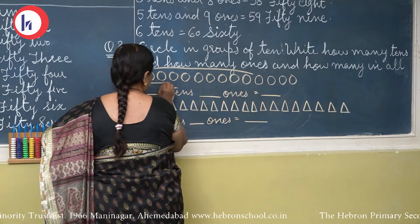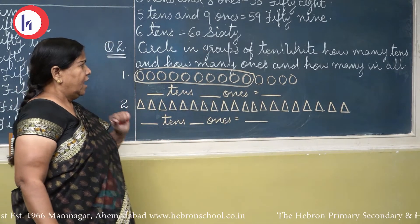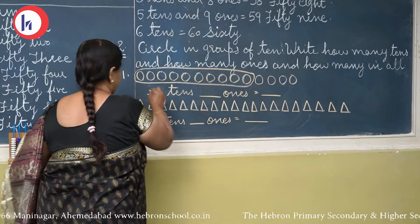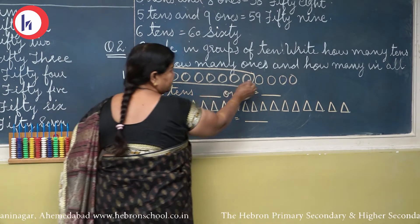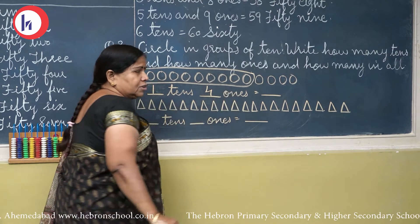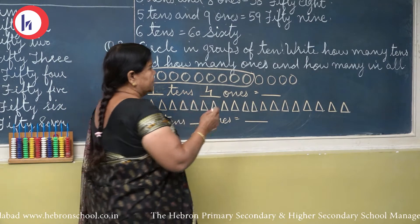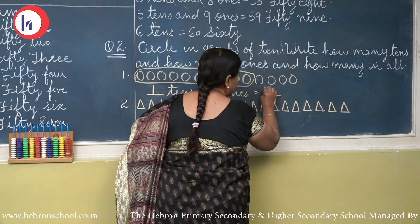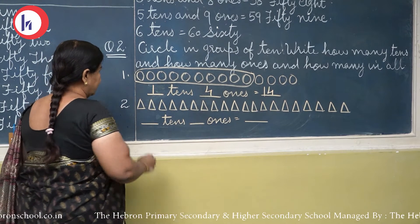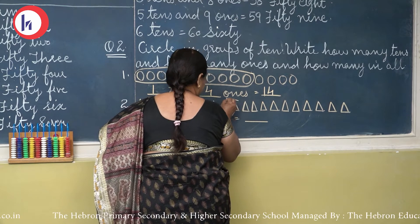5 tens means 50 and 6 ones. 5 tens and 6 ones — which will form? 56. 5 tens and 7 ones — 5 tens means 50, 50 and 7 which will form? 57. 5 tens and 8 ones — which will form? 58. 5 tens and 9 ones — which will form? 59. And 6 tens means 60. So 6 tens means 60.